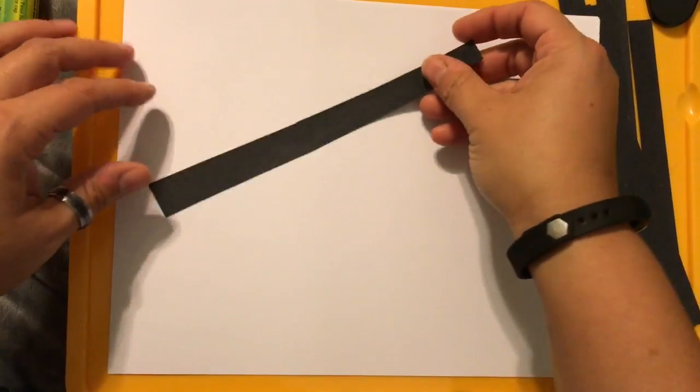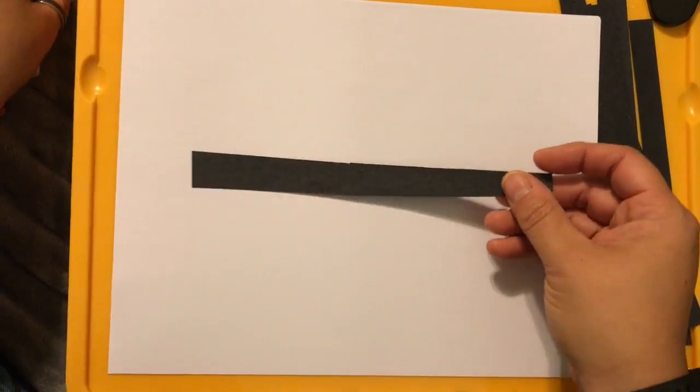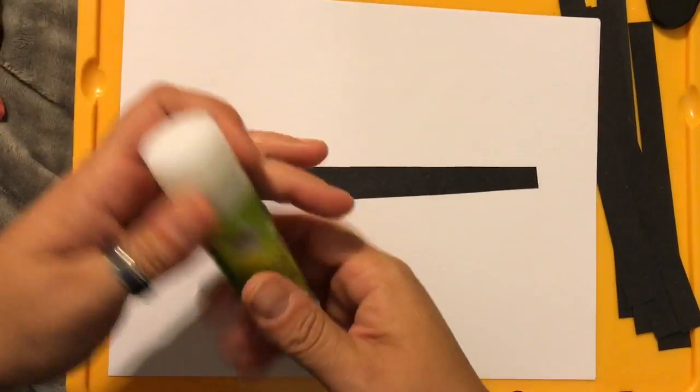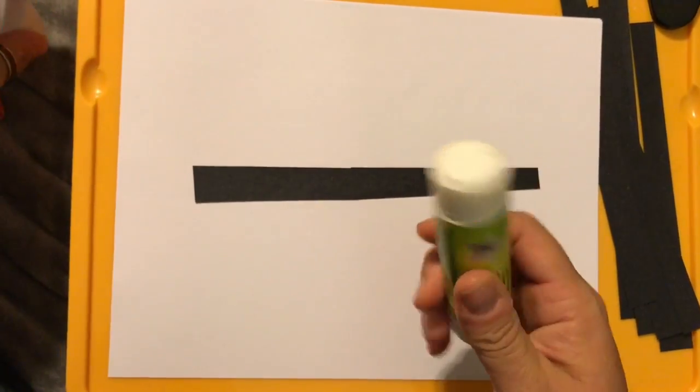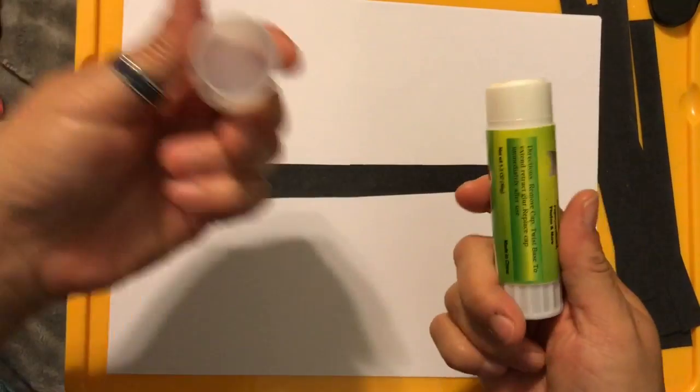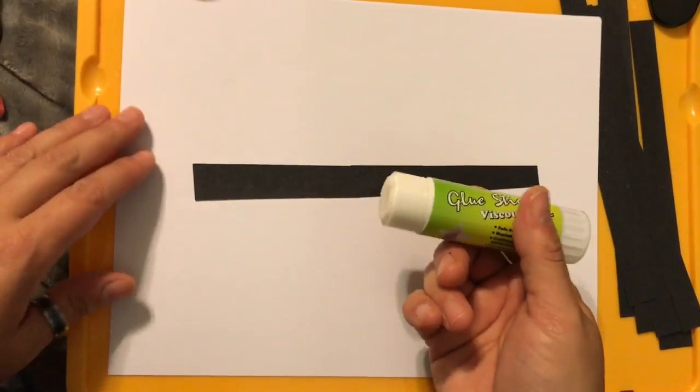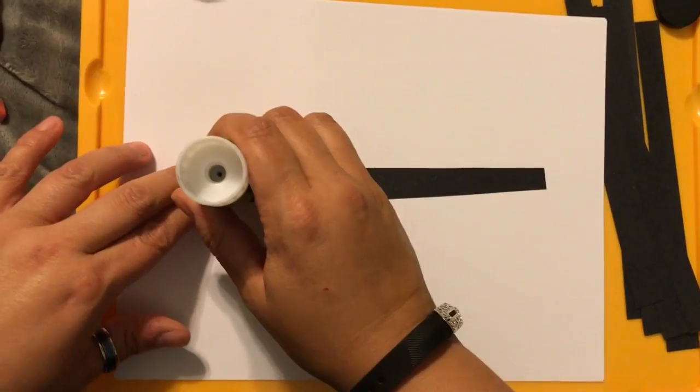So we're gonna have some fun today. We're gonna take our strips of paper and we're going to be gluing them onto a base paper. So first thing we're going to do is get out our glue sticks. Remember to always keep your glue stick cap handy so that you can put it away so it won't dry out.